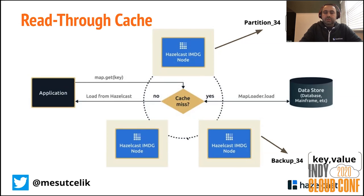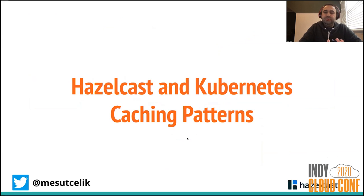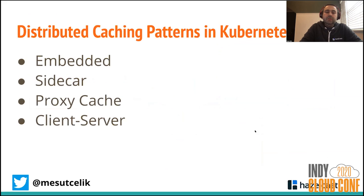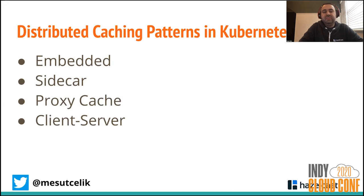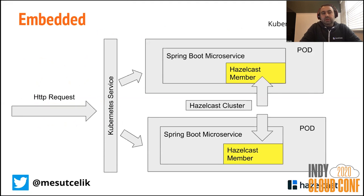I've talked about the caching patterns and how Hazelcast works. Now I'll match this with Kubernetes. In Kubernetes, for distributed caching patterns you have different options: embedded, sidecar, proxy cache, and client-server. Let me go through each one.